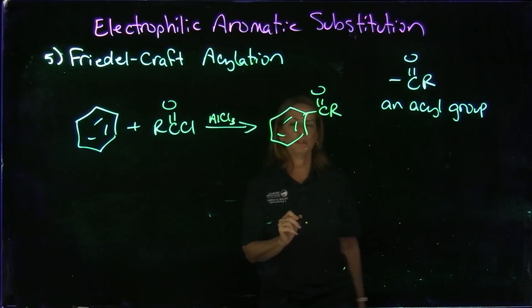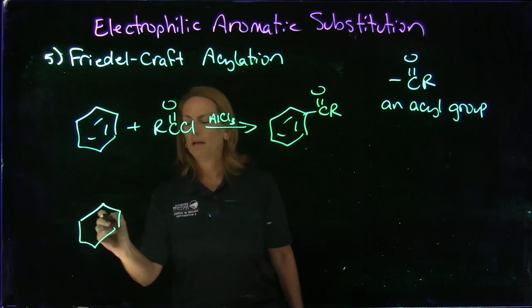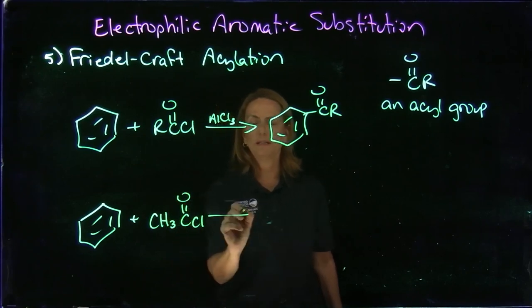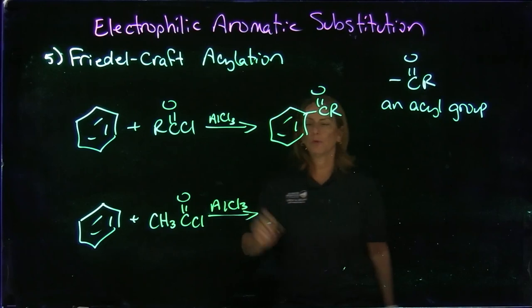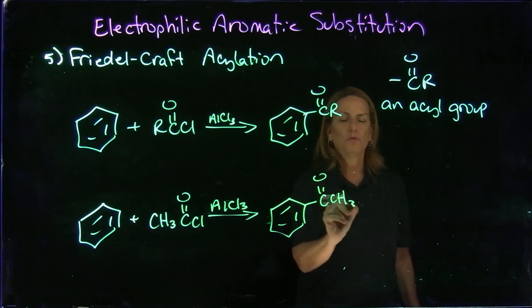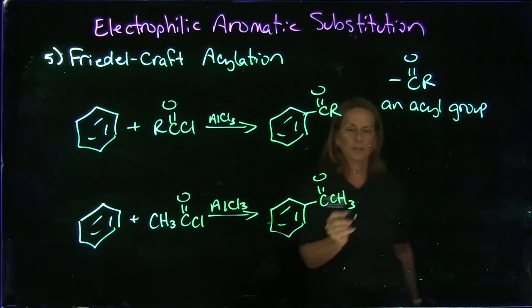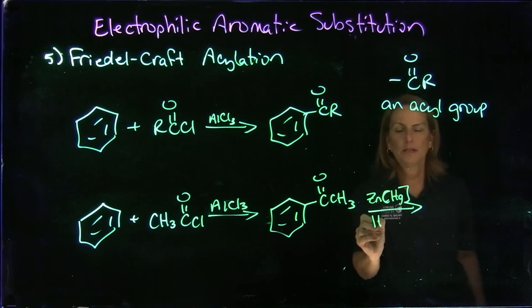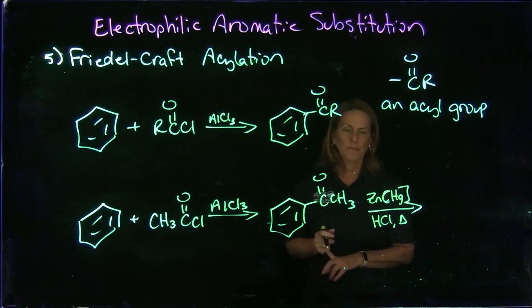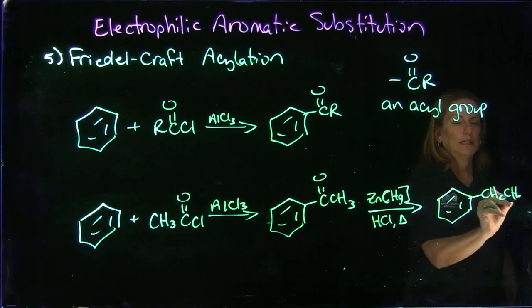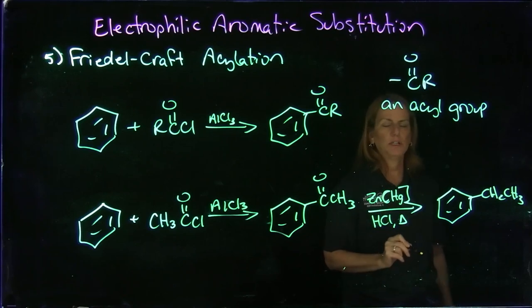Now why would we need to do this? You may need the carbonyl group, but also remember we had some issues—there could be rearrangement when you form the cation. To get around that problem with rearrangement, you could form the acyl group and then do a Clemmensen reduction. The reagents are zinc-mercury alloy, HCl, and heat. This reduction will get rid of the carbonyl. So if you needed a primary group to be added and rearrangement was occurring and causing problems, you could add the acyl group and then reduce it to remove the carbonyl.